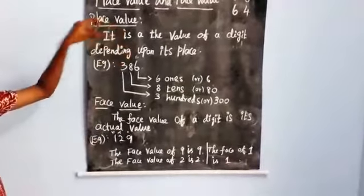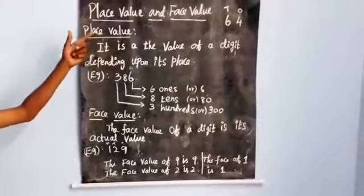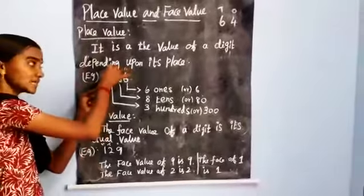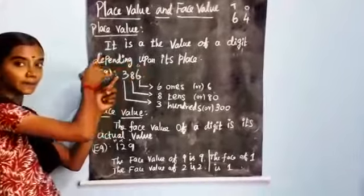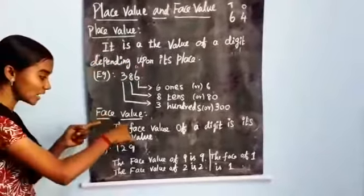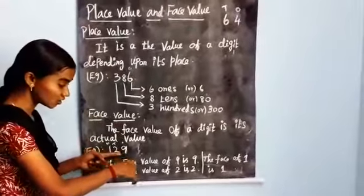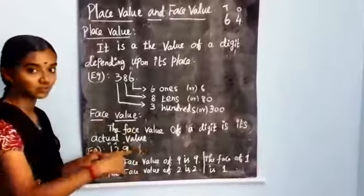That is the face value. Place value means the positional values: 1, 10, 100, 1000. Place value means you denote the positional values.